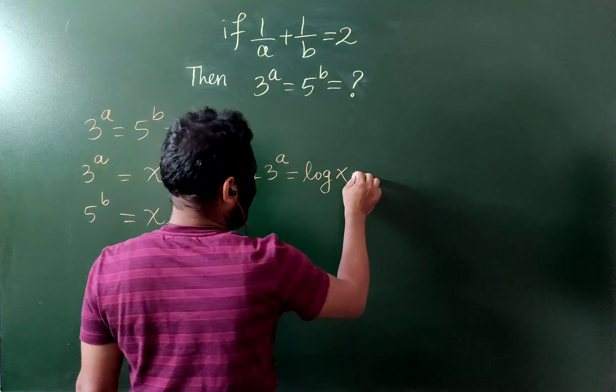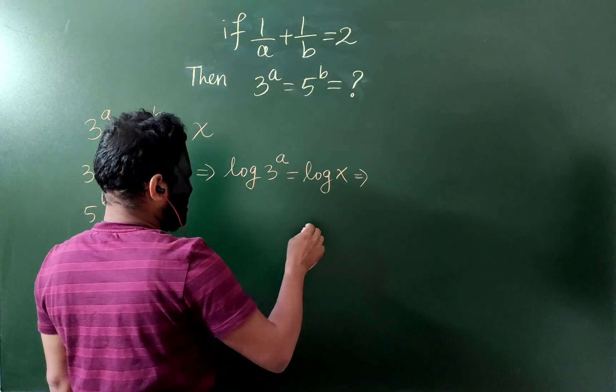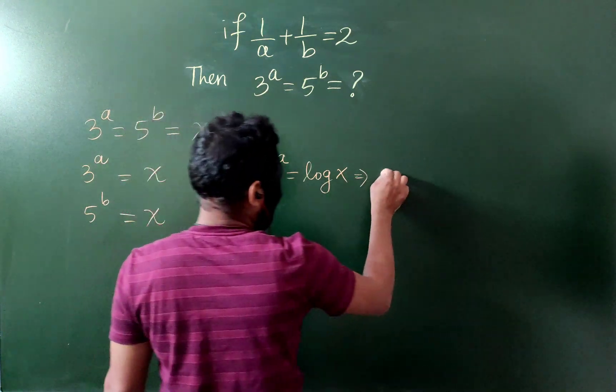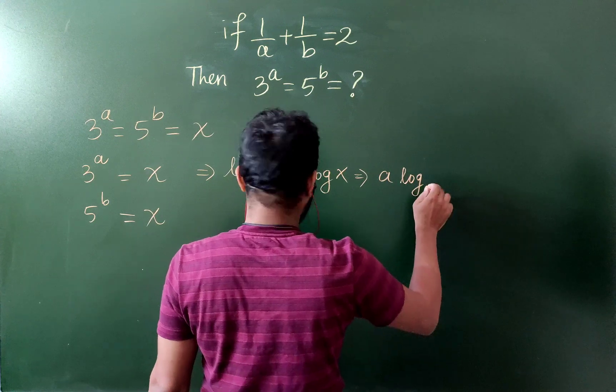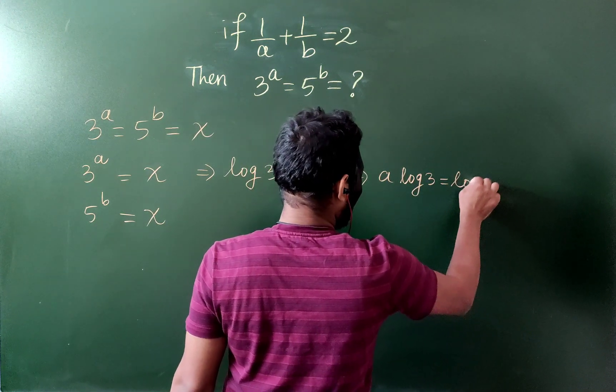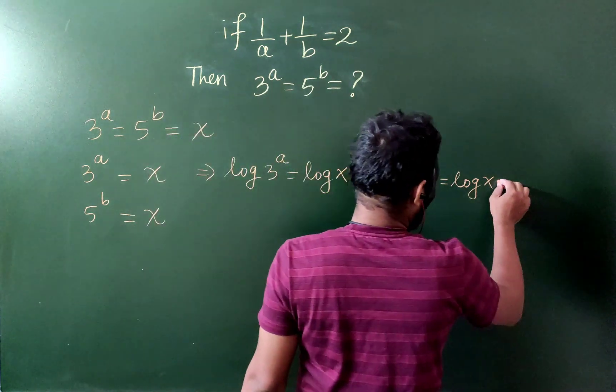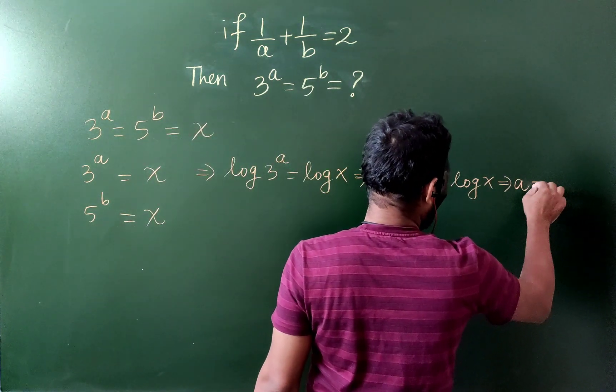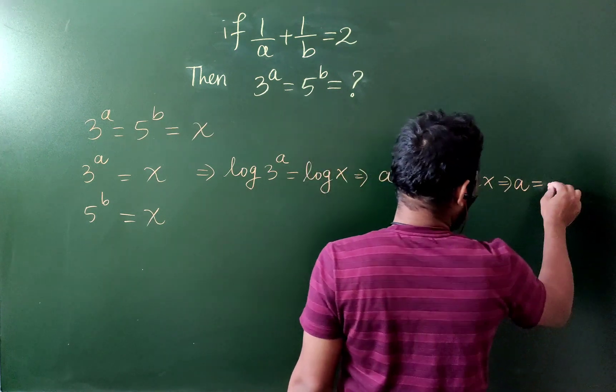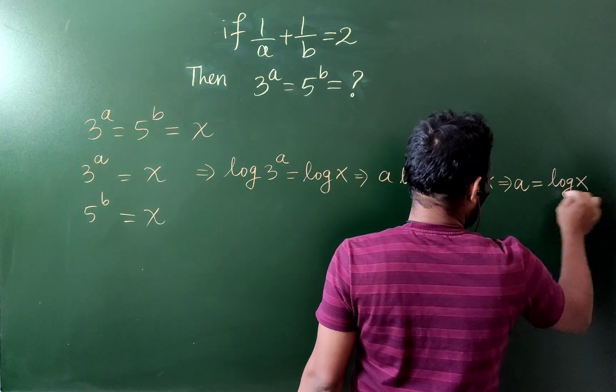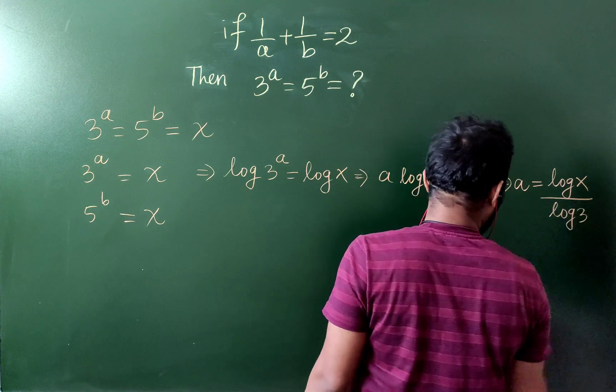and therefore I will have a log 3 equals to log x. And therefore a equals to log x by log 3.